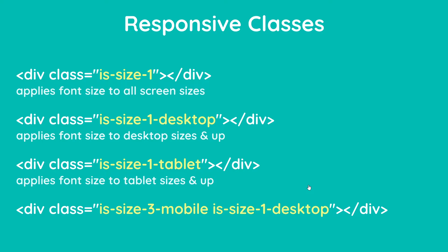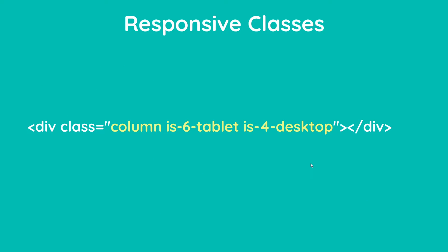We can also apply these responsive classes to other things as well, like column widths. So I could say something like `column is-6-tablet` and `is-4-desktop`. Remember also, all of the columns are going to stack one on top of the other for mobiles automatically, so we don't need to do `is-12-mobile` or anything like that — that happens for us automatically. Note that these responsive suffixes cannot be added to every single class in Bulma, just some of them, but text sizes and column widths are two that support it.